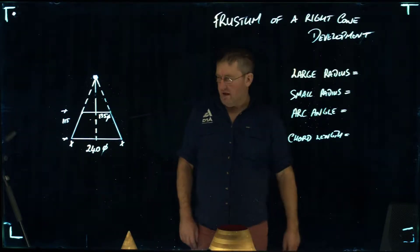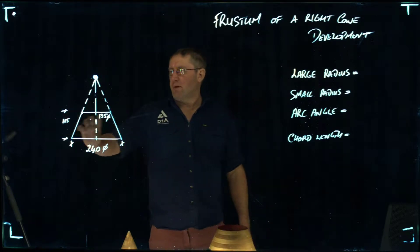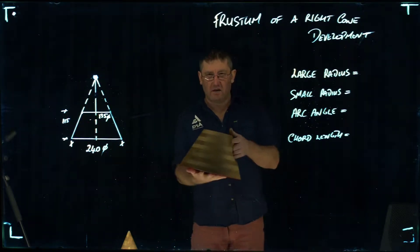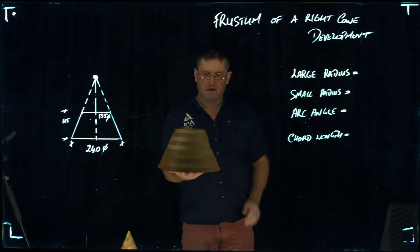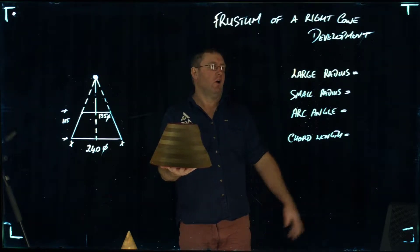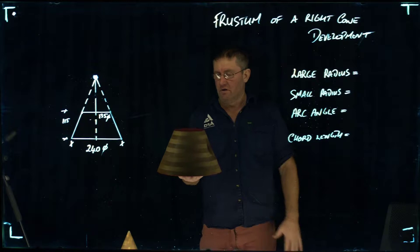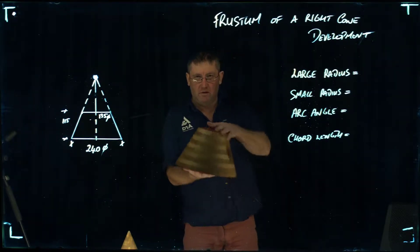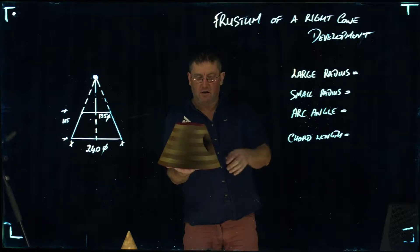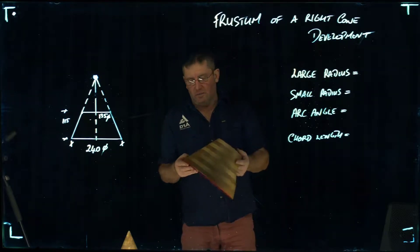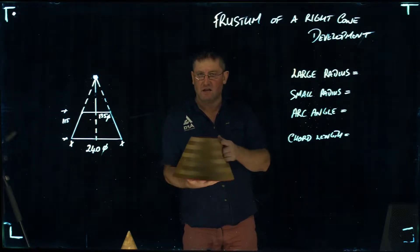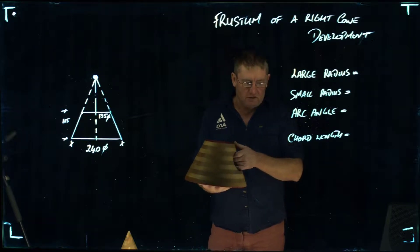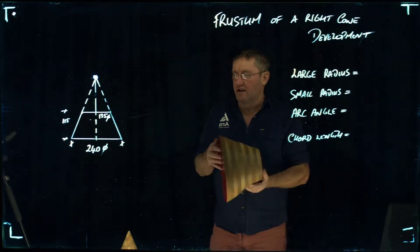This video is on developing out mathematically a cone. What I've got here made in timber is a frustum of a right cone. We have a diameter on the top, diameter on the bottom, and a vertical height. You're going to make it possibly out of stainless steel, aluminum, mild steel, galvanized copper, anything like that.